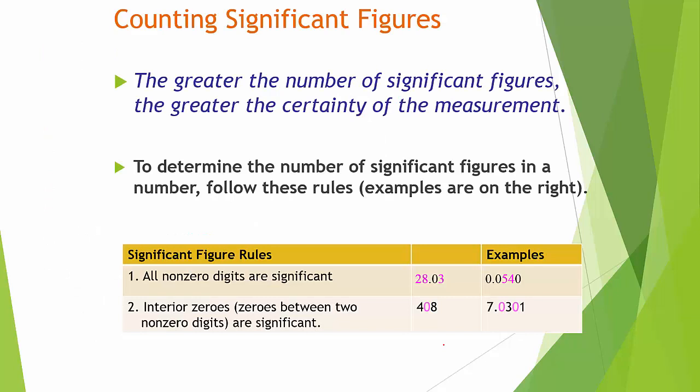Let's look at some different examples — same rules. You count all your non-zeros. Using all our rules with interior or sandwiched zeros: one number has three significant figures, another has five. But with leading zeros that don't count, one number has only three significant figures, another has only two, and one has only one.